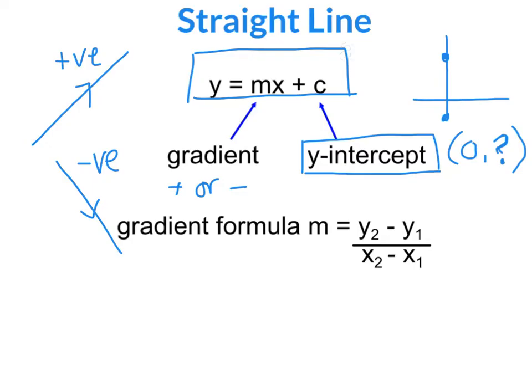The gradient formula is given as m equals y2 minus y1 over x2 minus x1. That is one you have to learn because it's not given to you in the exam — same with y equals mx plus c up the top. You need to know these off by heart. None of this is on your formula sheet.